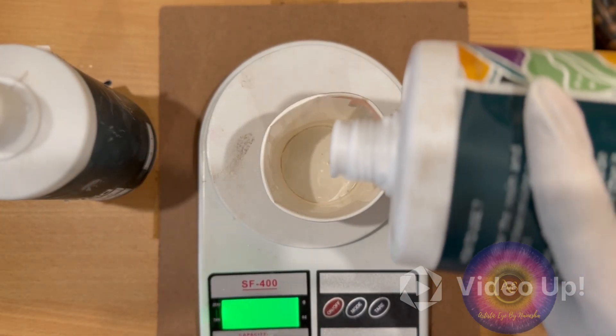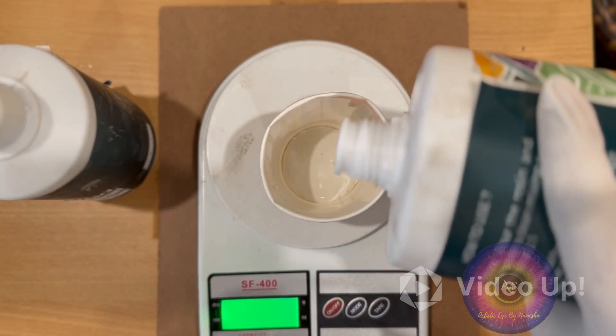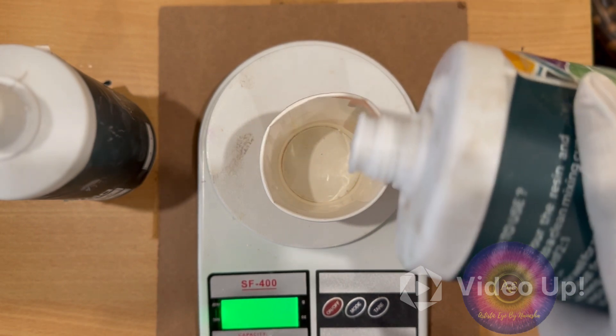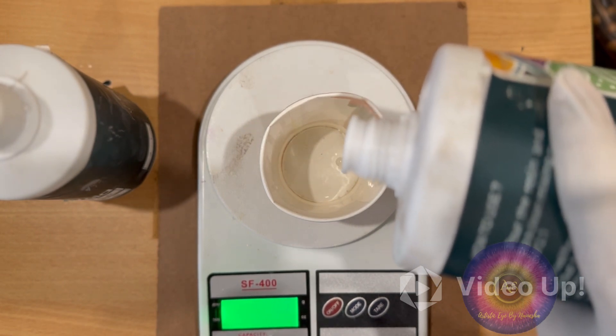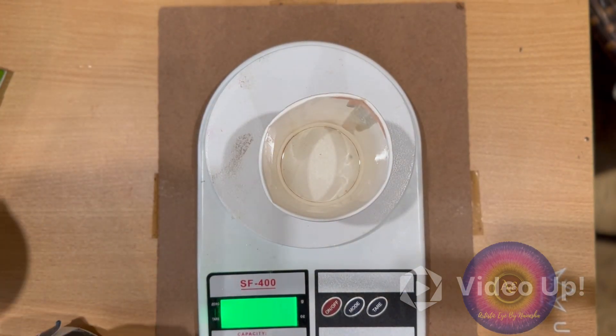I'm going to make the rakhi in small batches. Right now I'm going to pour 14 grams of resin and 7 grams of hardener for one batch.